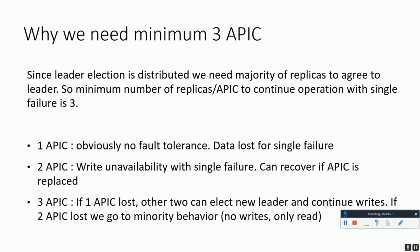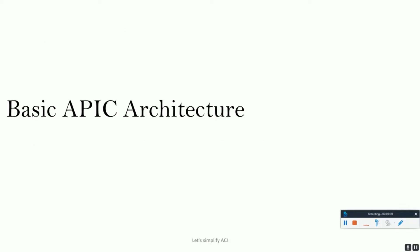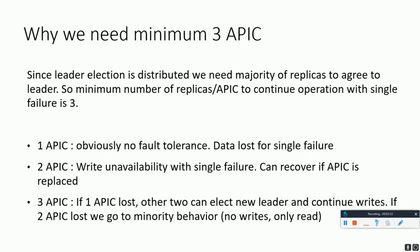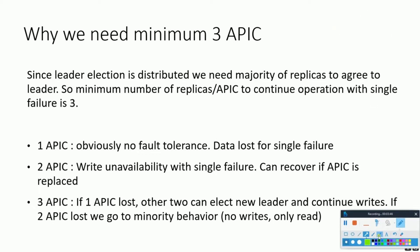This slide is a brief summary of what we've been discussing. For one APIC, obviously there is no fault tolerance — data is at risk on a single failure. For two APICs, write unavailability occurs with a single failure, but it can recover if an APIC is replaced. For three APICs, if one APIC is lost, the other two can elect a new leader and continue writes. If two APICs are lost, the remaining one goes into minority behavior — read-only mode.